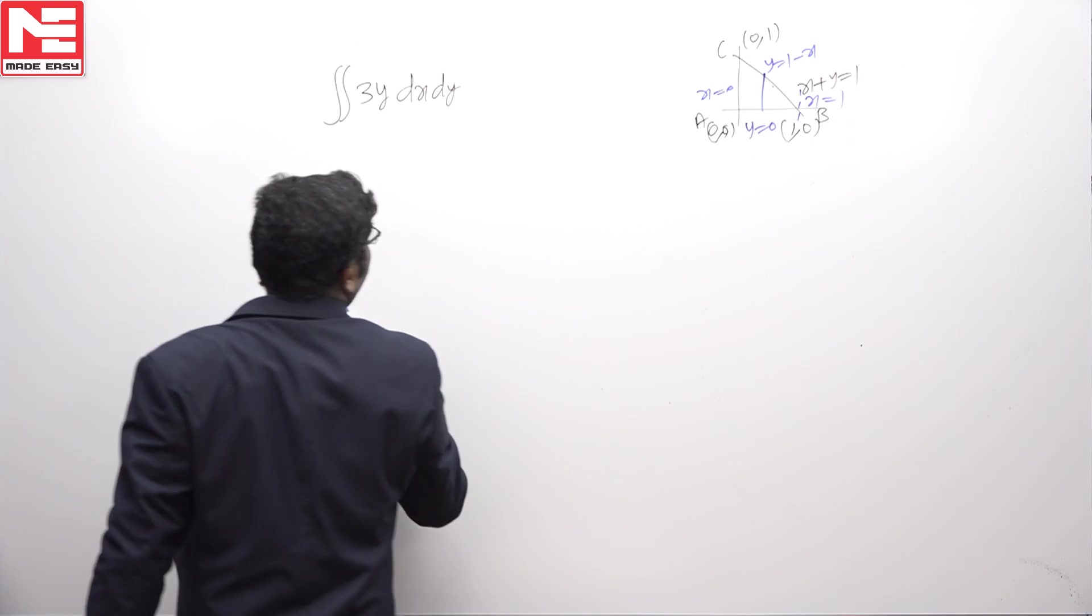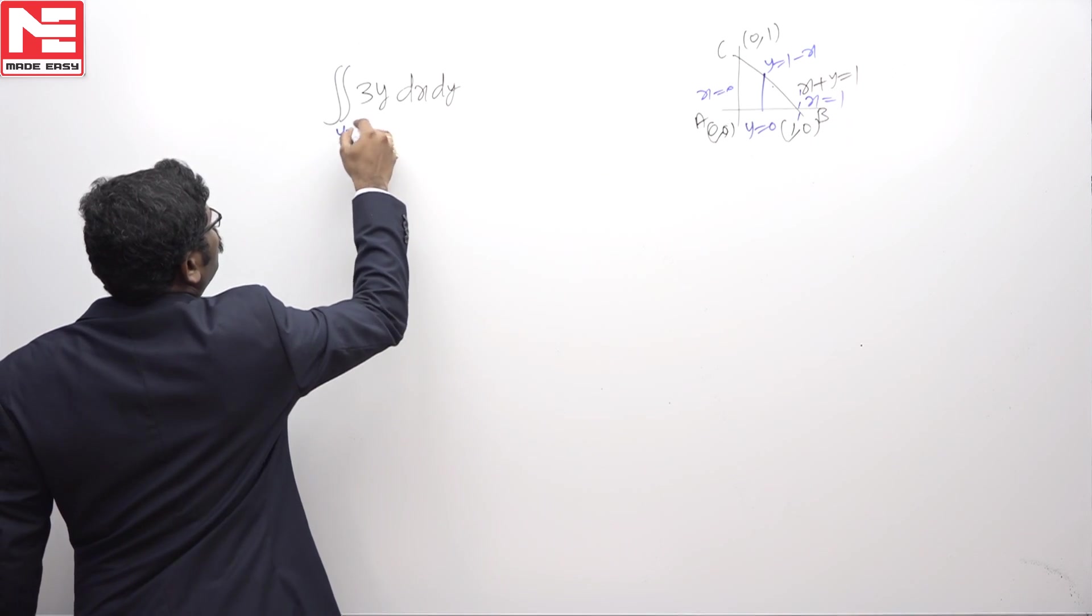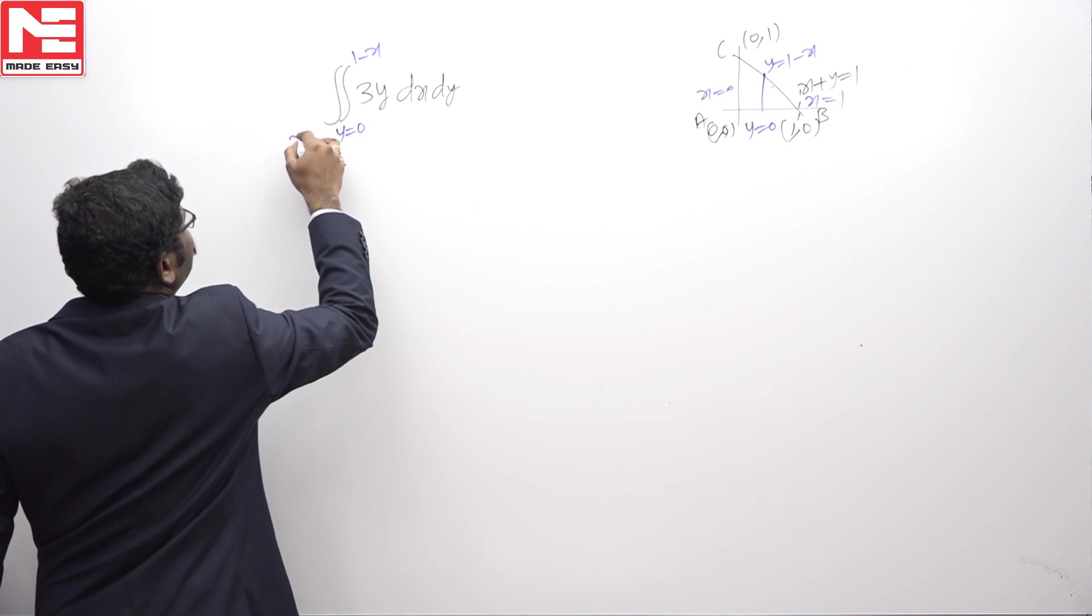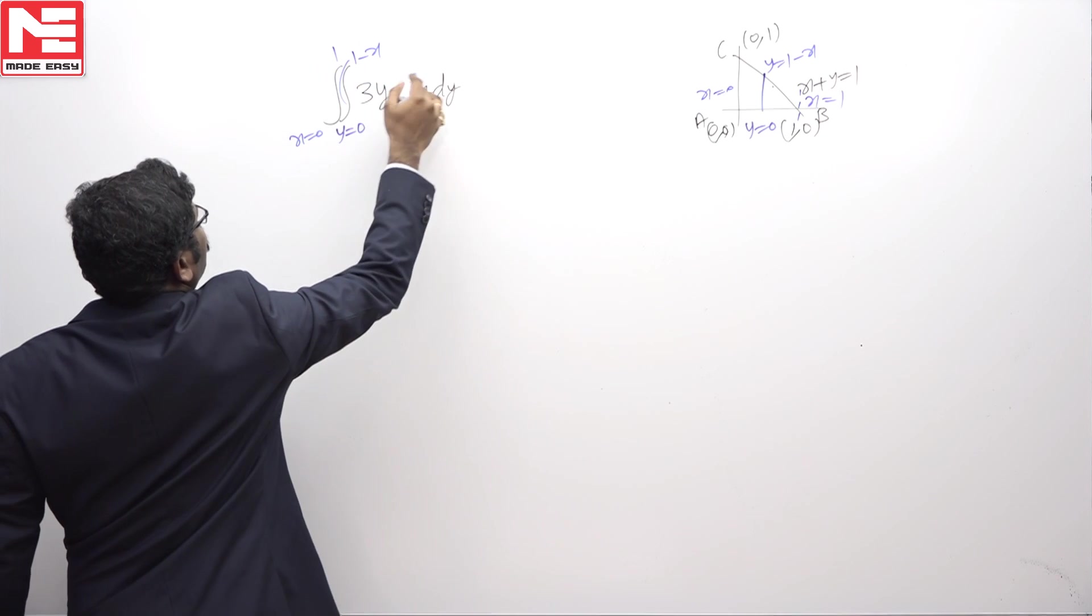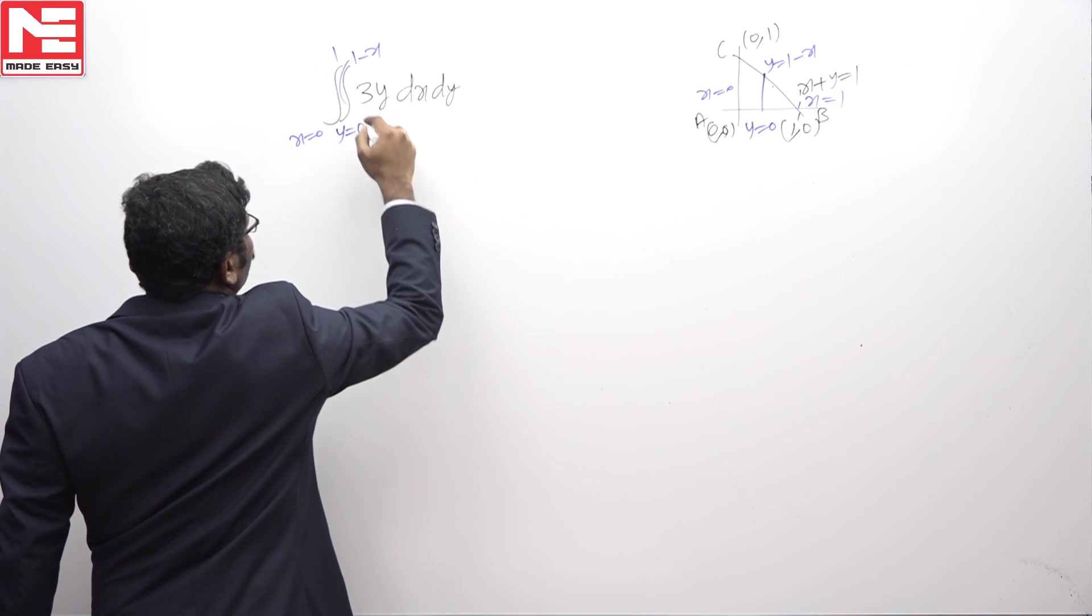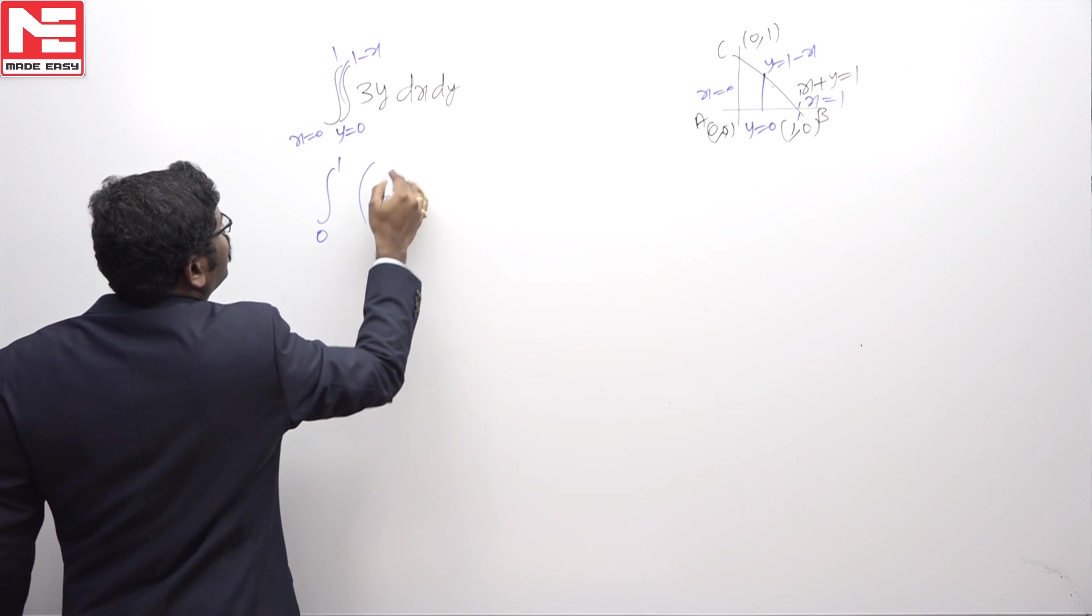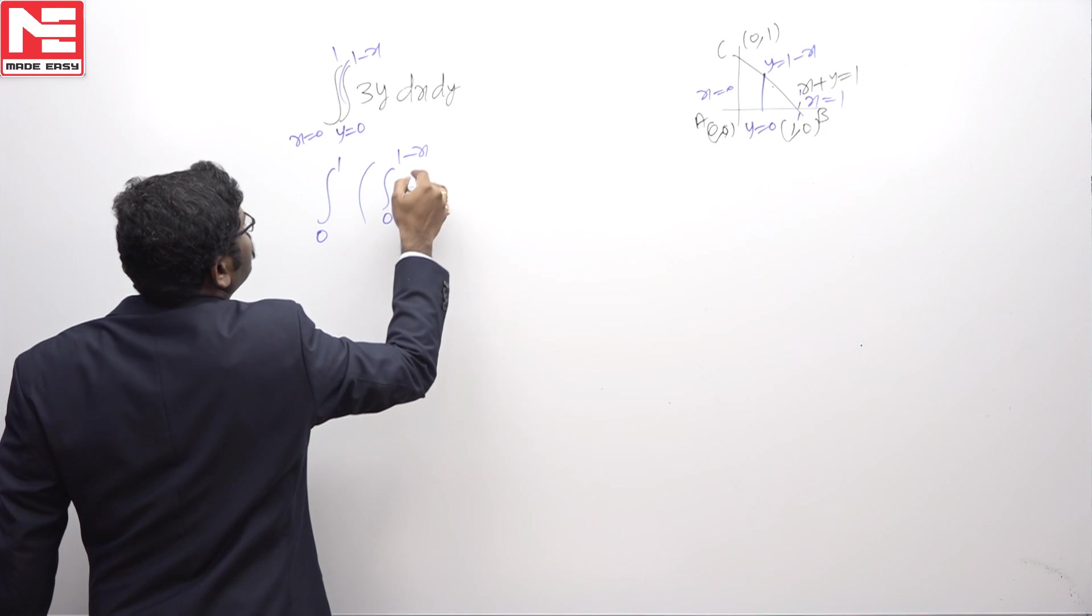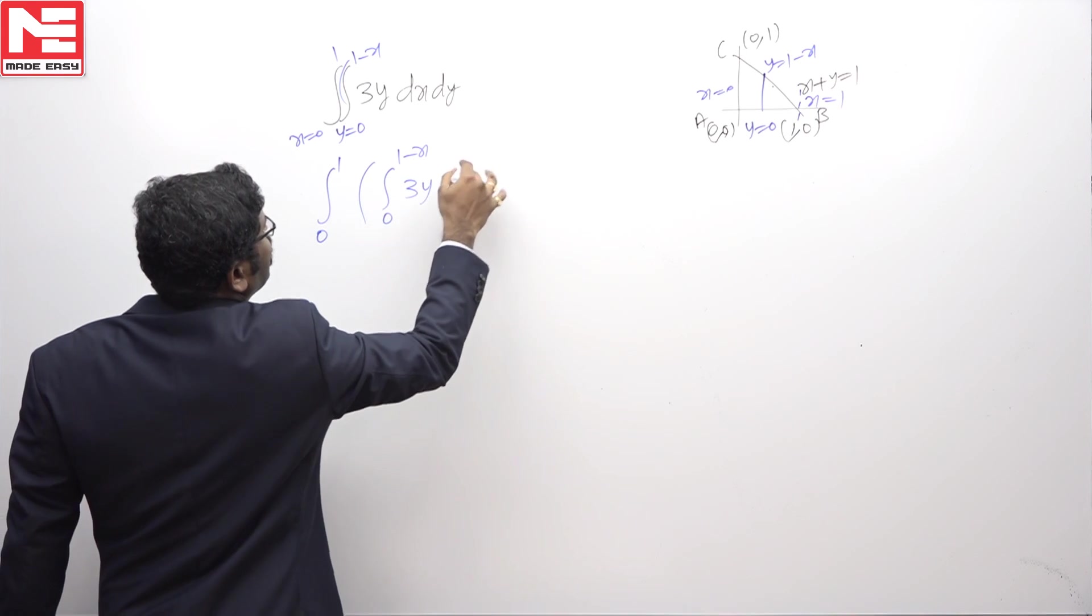So now the limits are y varies from 0 to 1 minus x, and x varies from 0 to 1. You have to integrate first with respect to y: integral from 0 to 1 of integral from 0 to 1 minus x of 3y dy, then dx.